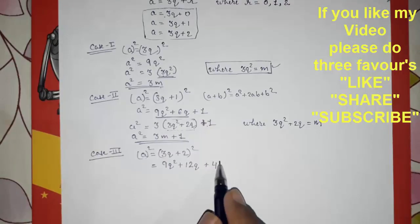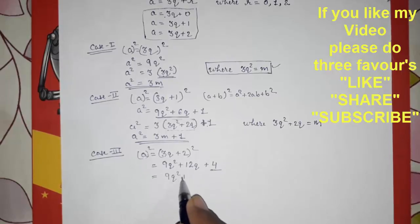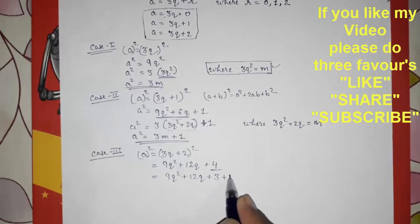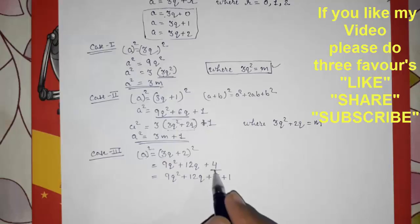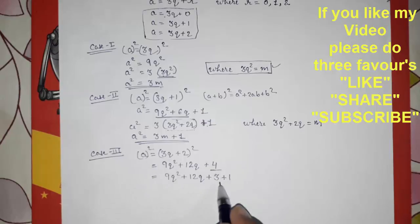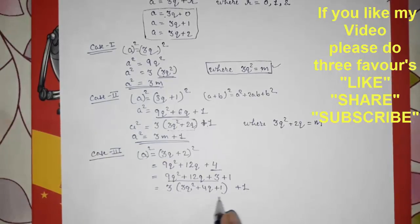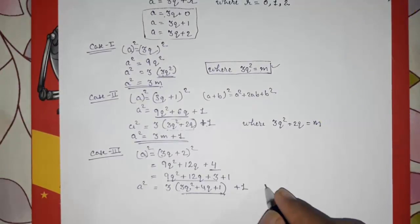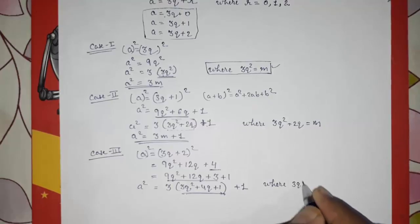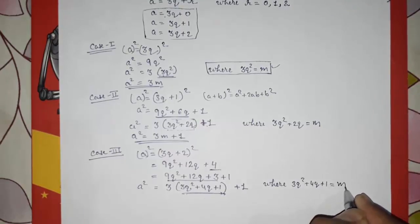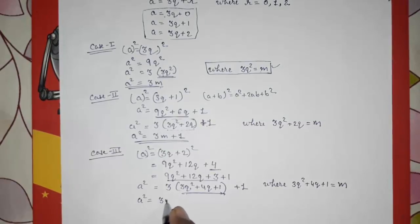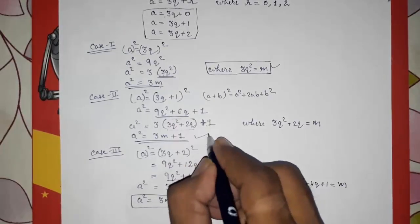Since 4 cannot be our remainder when dividing by 3, we split it: 9q² + 12q + 4 = 9q² + 12q + 3 + 1. Taking 3 common: a² = 3(3q² + 4q + 1) + 1. Letting m = 3q² + 4q + 1, we get a² = 3m + 1.